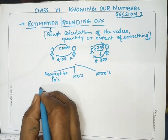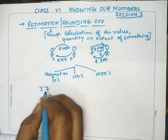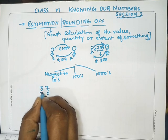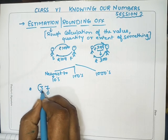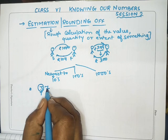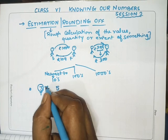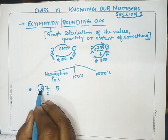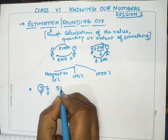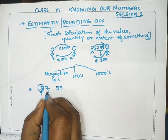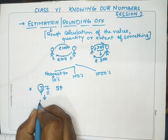Consider the number 37. As we know, 7 is in the ones place and 3 is in the tens place. To round off to the tens place, we look at the digit just to the right — the ones place. If that digit is 5 or more, we add 1 to the tens place and the ones place becomes 0. Here 7 is greater than 5, so we add 1 to the tens place: the answer is 40.